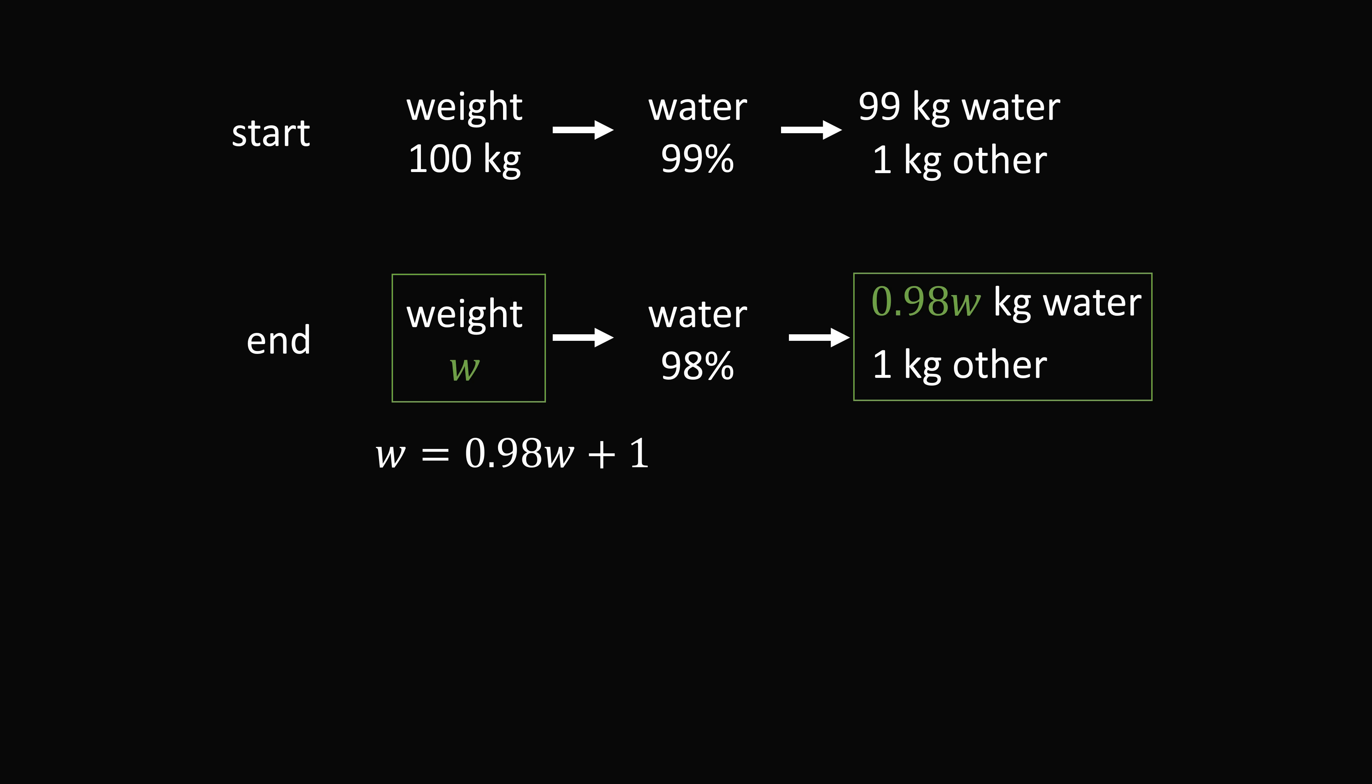We'll solve this equation for w. Subtract 0.98w from both sides. w minus 0.98w is equal to 0.02w. This equals 1. Divide both sides by 0.02, and that gives the answer that w is equal to 50.